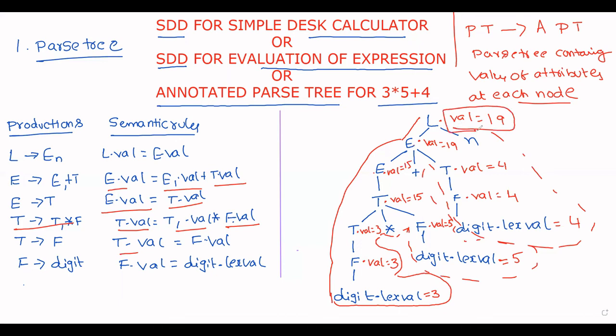So we have evaluated the expression: 3 times 5 is 15, plus 4 is 19. This is the way to construct the annotated parse tree. The simple procedure is: traverse from top to bottom and left to right. If there is a reduction, execute the corresponding semantic action. We will discuss more examples in the next session.